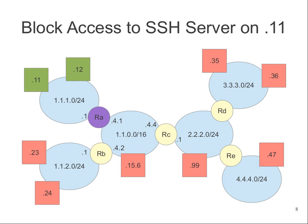There's a secure shell server running on computer 1.1.1.11. We want to block external users from accessing that SSH server. The task is to define the firewall rule that would block external users from connecting to it.